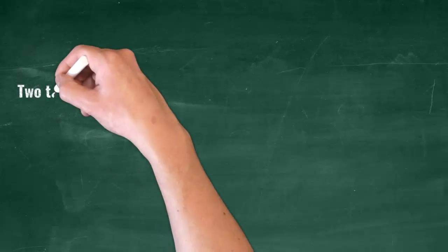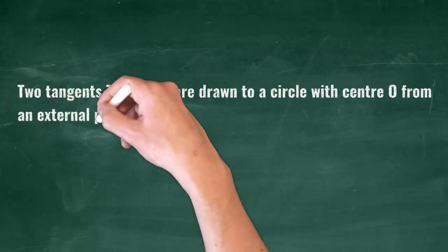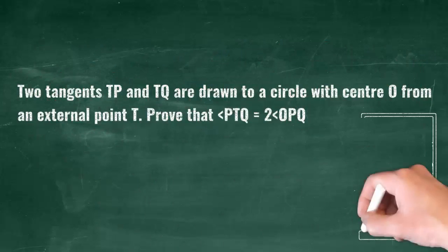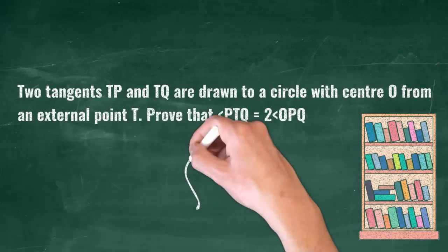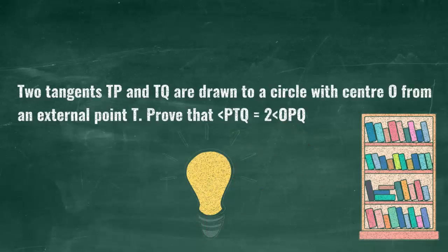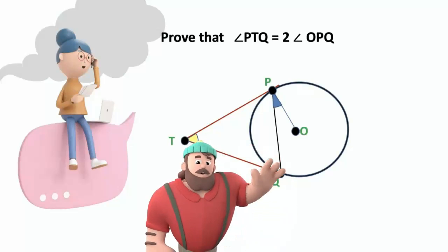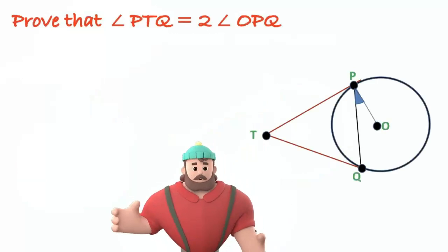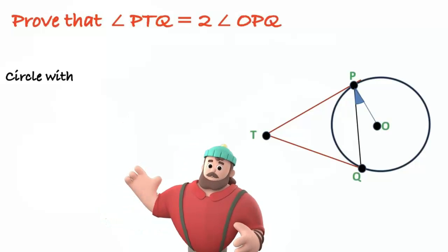Two tangents TP and TQ are drawn to a circle with center O from an external point T. Prove that angle PTQ equals two times angle OPQ.